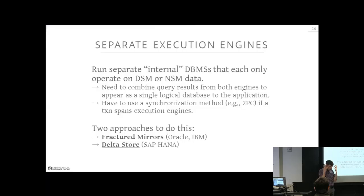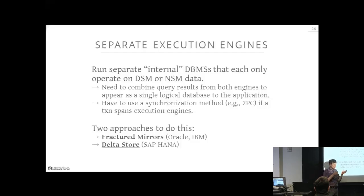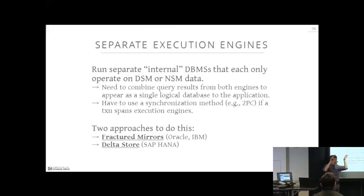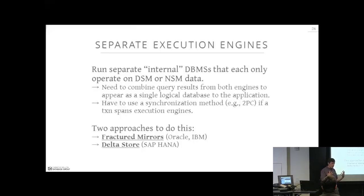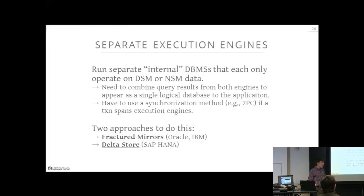To implement the hybrid storage model, there are two broad approaches. The first is separate execution engines — almost two internal database systems each optimized for NSM or DSM data. Think of combining MySQL (NSM) and Vertica (DSM) behind a middleware wrapper that presents a single logical database. When a query comes in, the wrapper decides whether to push it to the NSM or DSM engine. Results from both engines must be combined, and any transaction spanning both systems requires an atomic commit protocol like two-phase commit to avoid torn updates.